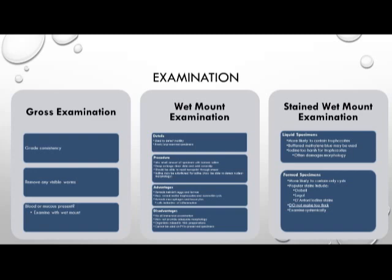The wet mount is used for the detection of motility on fresh and unpreserved specimens. The procedure includes taking a small amount of the sample, mixing it with a few drops of isotonic saline, then dropping on a clear slide. Add a cover slip and view microscopically. You should ideally be able to read a newspaper through the smear — if you can't, it could be too thick. Alternatively, iodine may be substituted for isotonic saline, which could allow for the detection of nuclear morphology of the organism.